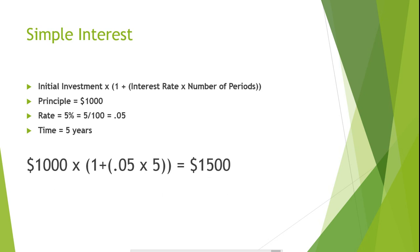You can see we got this by multiplying $1,000 by one plus the interest rate of 5% times five, which is the number of years the investment was held, giving us $1,500.